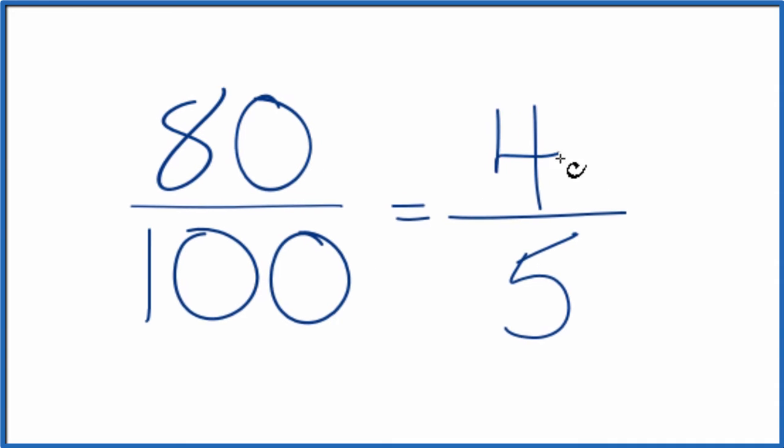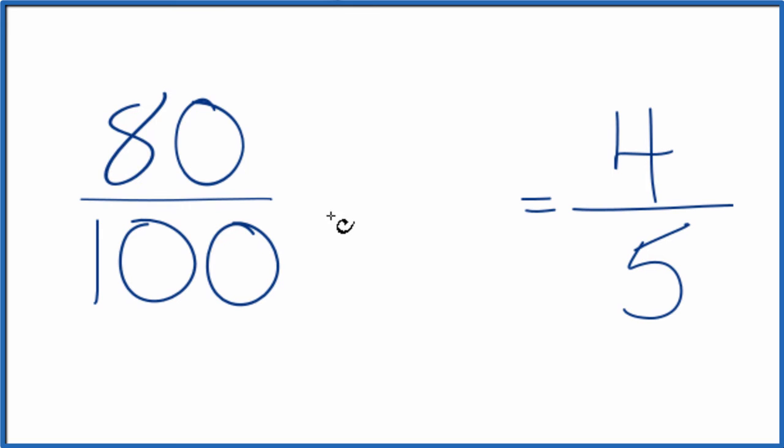There is another way we could do this. We could divide 80 and 100 by 10. 80 divided by 10 is 8, and 100 divided by 10, that's 10. And then we could divide both of these by 2 to get 4 fifths.